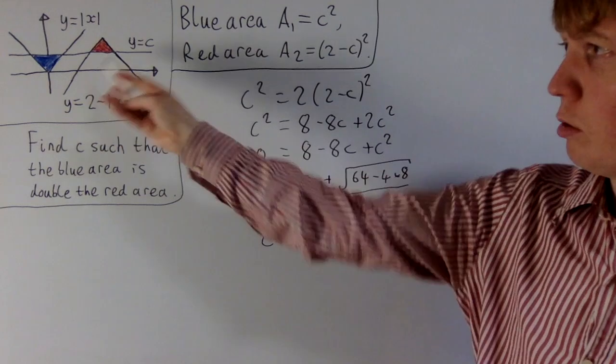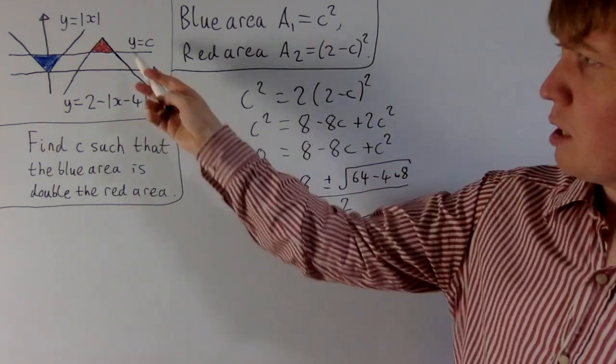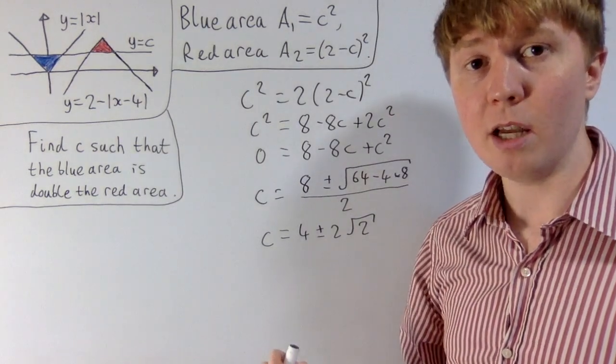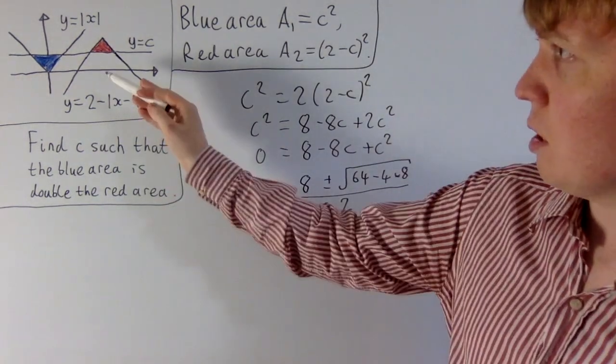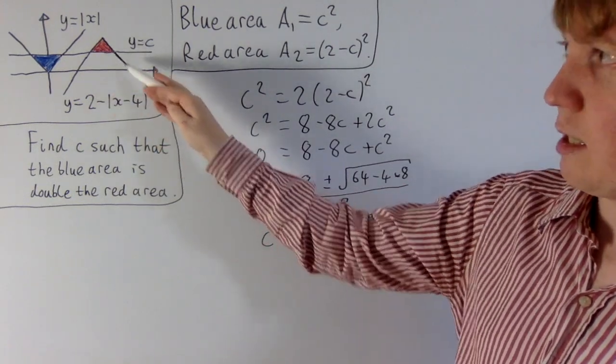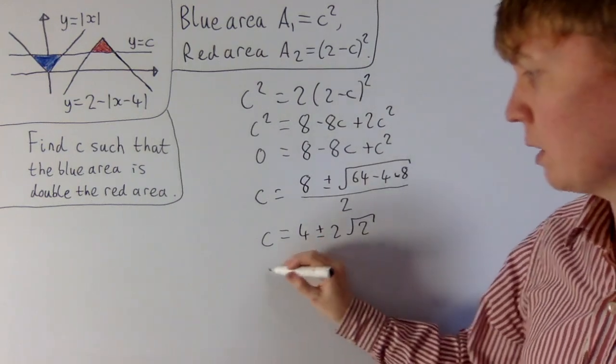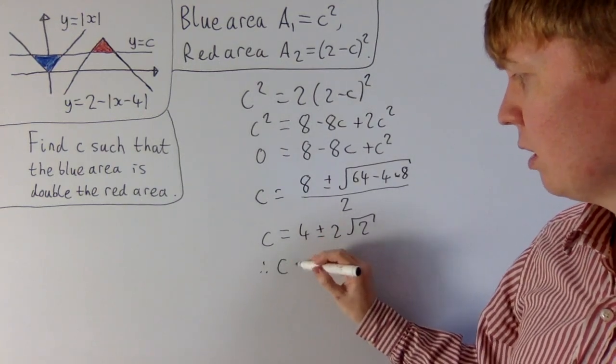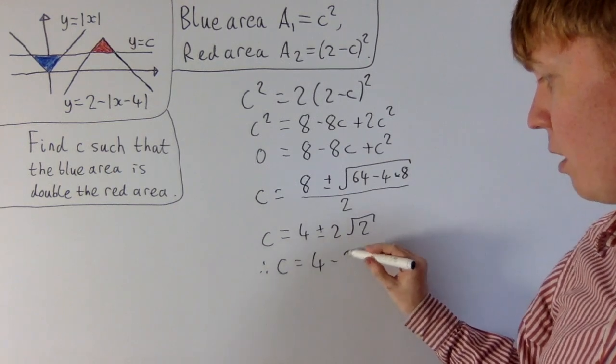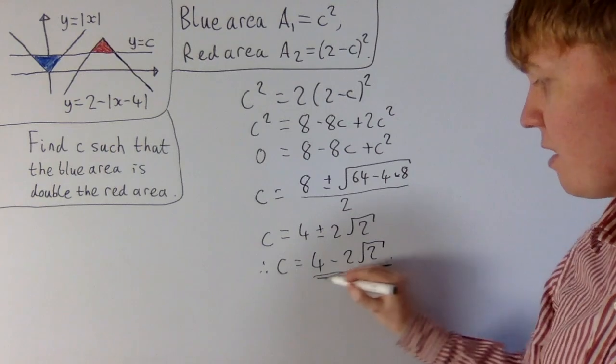But if you think about the initial geometric problem, are both of these solutions going to be valid? Well, let's think about the values that c can take here, because it does need to intersect both of these graphs. So c certainly has to be greater than 0, but in order to intersect this one on the right-hand side, c actually has to be less than 2. So this rules out one of our possibilities. Then we can conclude that c has to be equal to 4 minus 2 root 2, which you can verify is between 0 and 2.